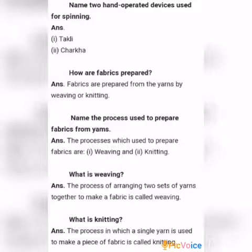Next question: What is knitting? Answer: The process in which a single yarn is used to make a piece of fabric is called knitting. Okay children, write the questions and answers in your chemistry notebook and study well. In the next class, we will discuss the remaining questions and answers.